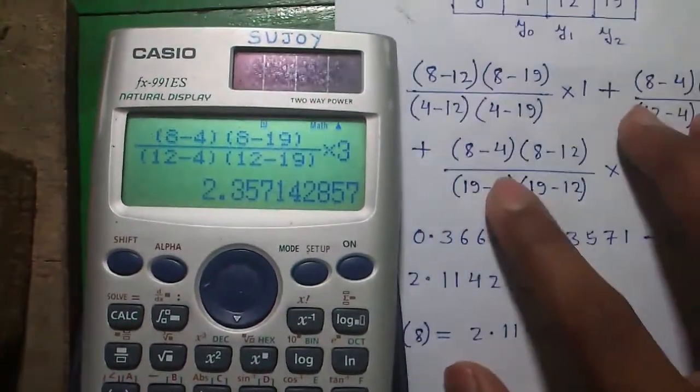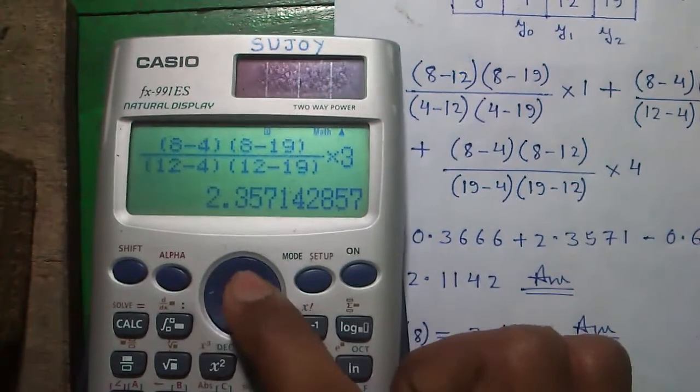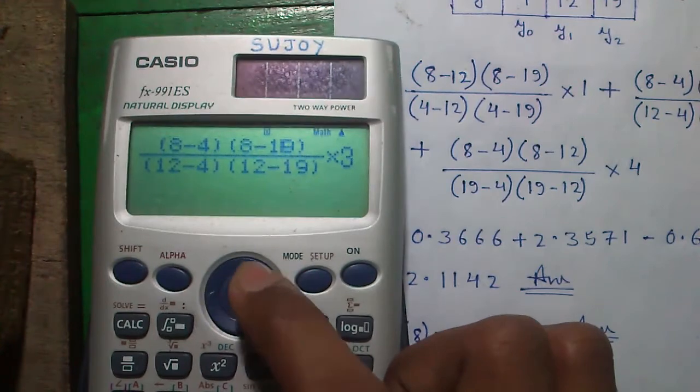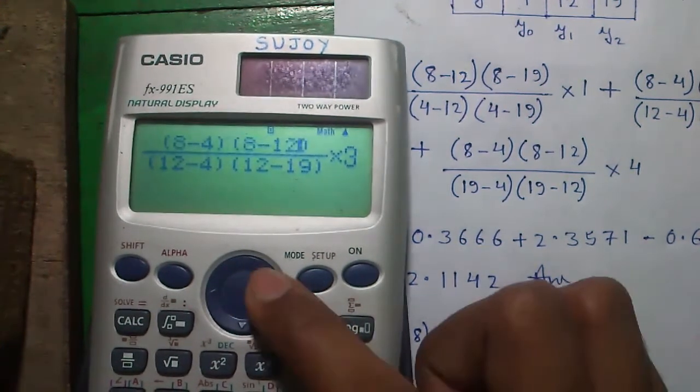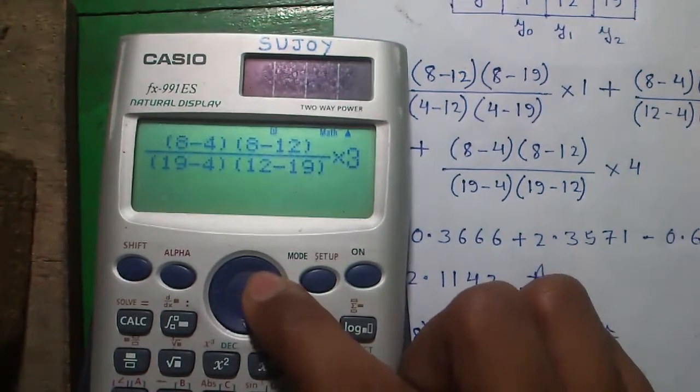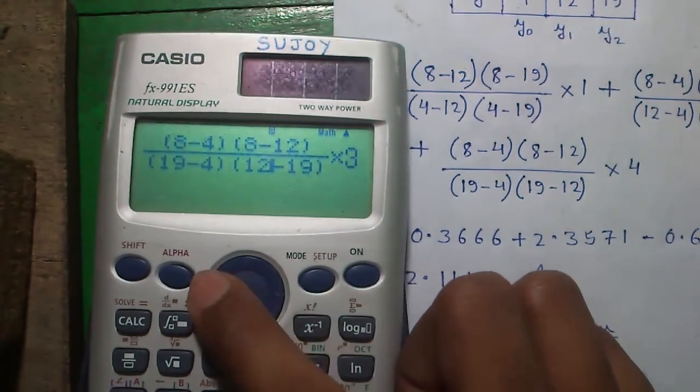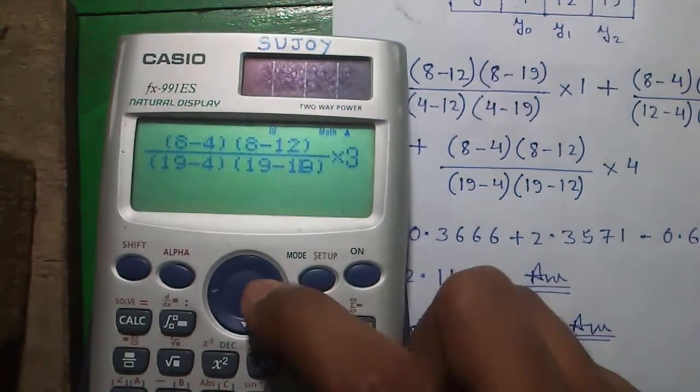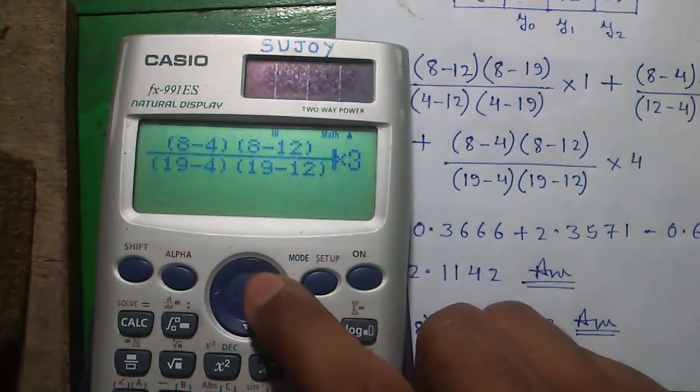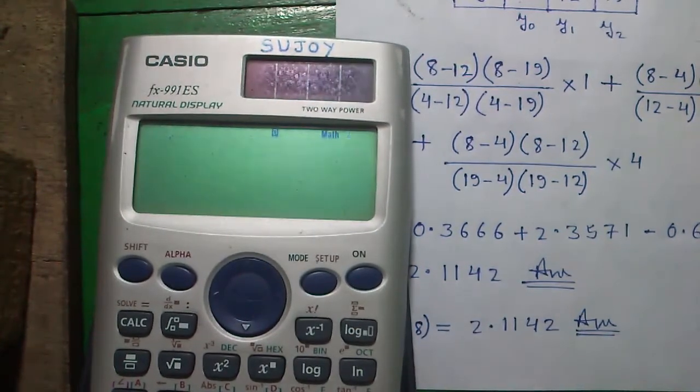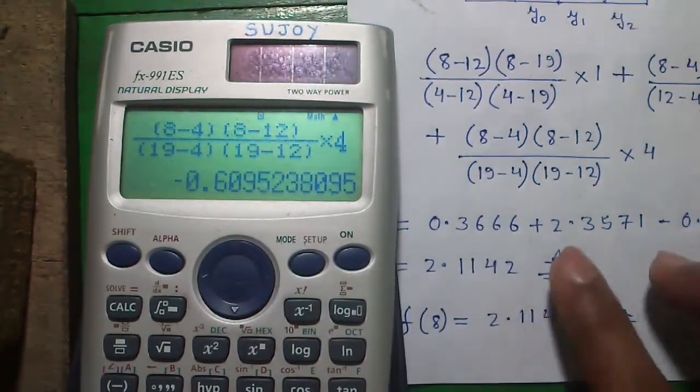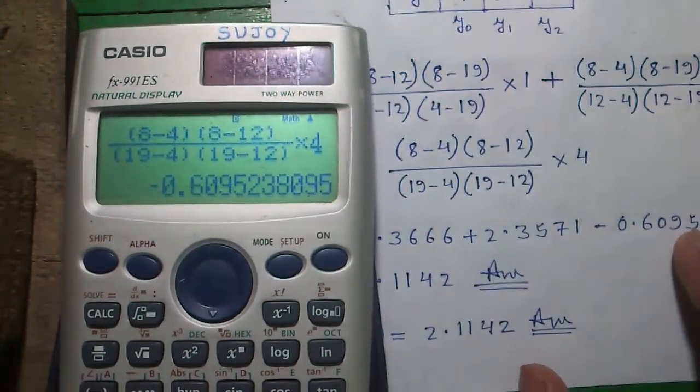And for the final term, 8 minus 4, 8 minus 12, 19 minus 4, 19 minus 12, 19 minus 12 into 4. That is minus 0.6095.